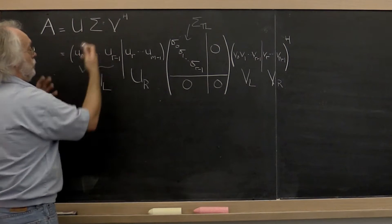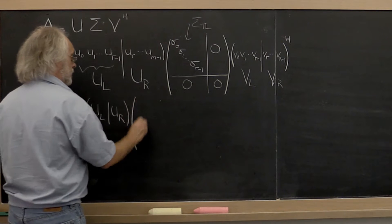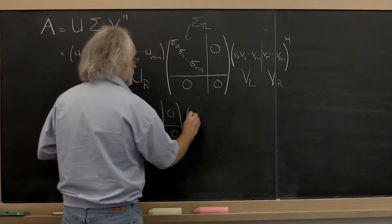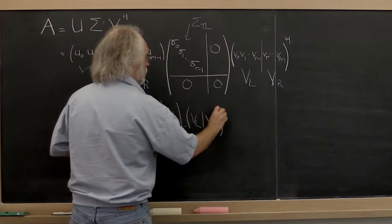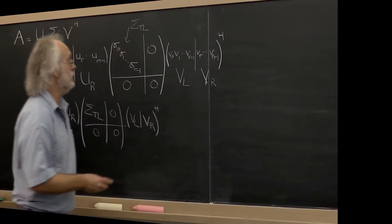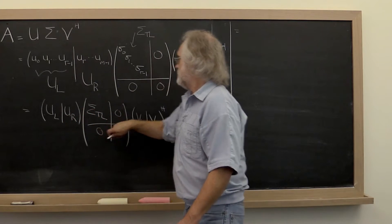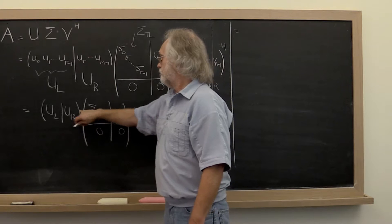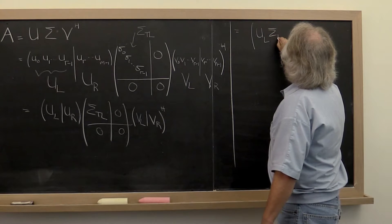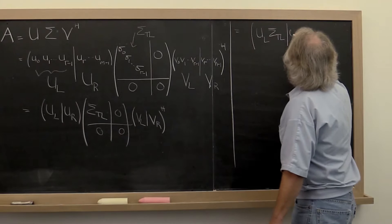What that means is we can view our singular value decomposition as U_left, U_right times the matrix with the top left exposed and zeros for the rest, and then the matrix V_left, V_right which must be transposed. Now if you multiply this out, this times this gives you U_left times sigma_top_left plus U_right times zero. So we get U_left times sigma_top_left for the left part, and then U_left times zero plus U_right times zero gives you a block of zeros.